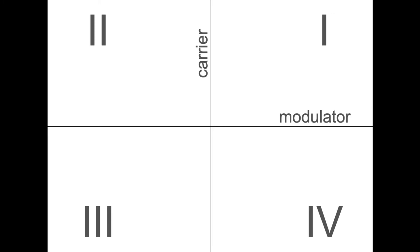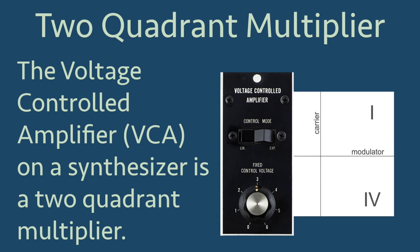Another kind of analog multiplier is the two-quadrant multiplier, also known as the voltage-controlled amplifier or VCA on a synthesizer. This is a two-quadrant multiplier because the carrier wave can have positive and negative voltages, but the modulator must only have positive voltages. From our previous image, the two quadrants would be one and four.